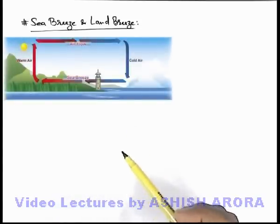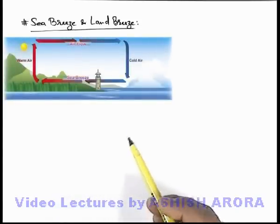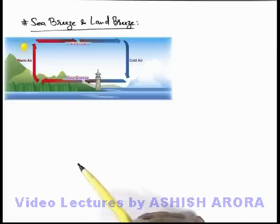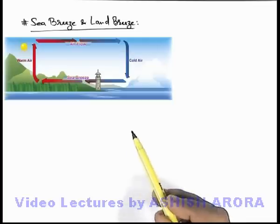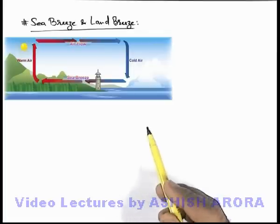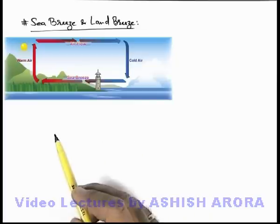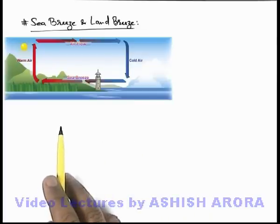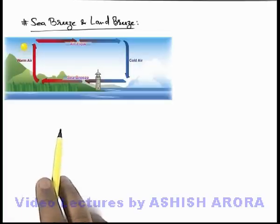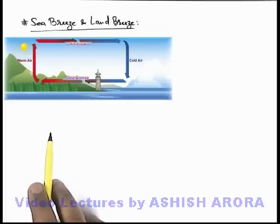Here we can see a picture which gives us an idea about sea breeze. In daytime, due to high temperature, the land temperature increases much above the sea temperature. In the sea, due to conduction of heat, heat is distributed in the whole body of ocean so its temperature rises gradually. The land, which has very low specific heat, means by small absorption of heat its temperature increases to large extents. In summers or in daytime in coastal areas, the land temperature is much higher, due to which the air in contact with the land expands and rises above.